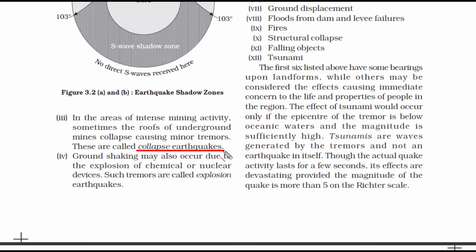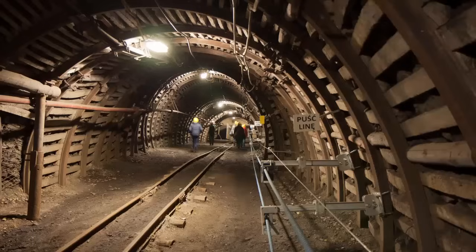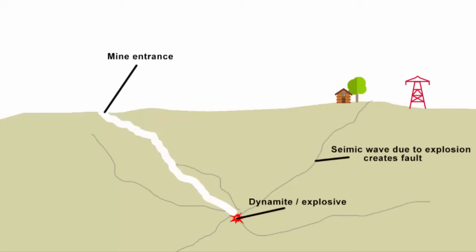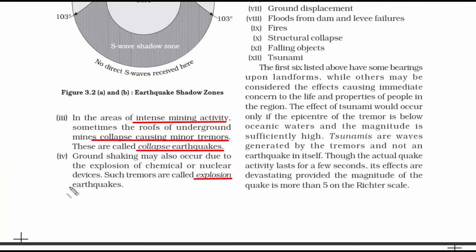The third type is collapse earthquakes, which take place in areas of intense mining activity. The roofs of underground mines collapse causing minor tremors, as mining involves a lot of rock explosion that produces seismic waves called tremors. The fourth type is explosion earthquakes. Due to the explosion of chemical or nuclear devices, seismic waves are produced, creating tremors that move and break rocks — resulting in an entirely manually created earthquake.